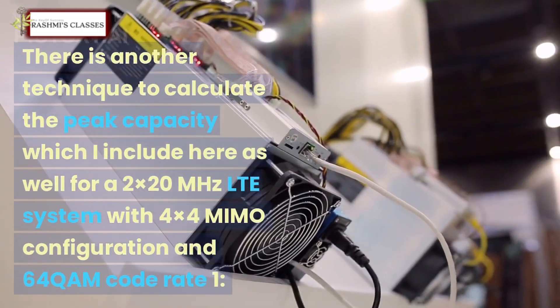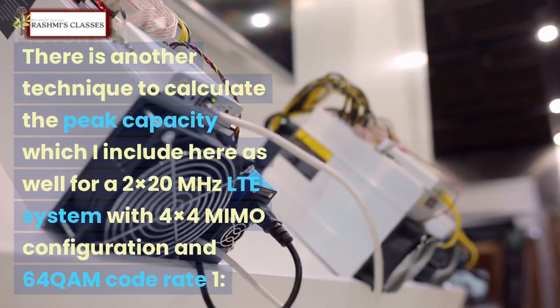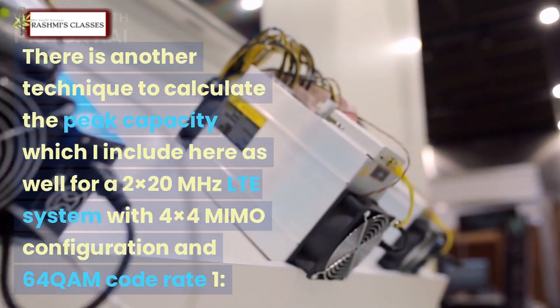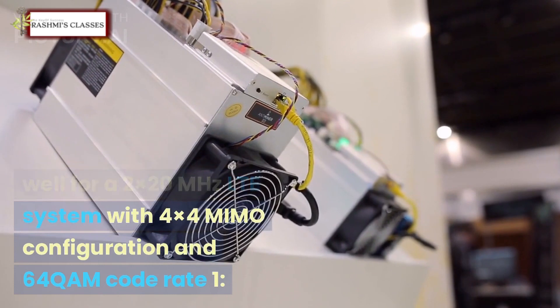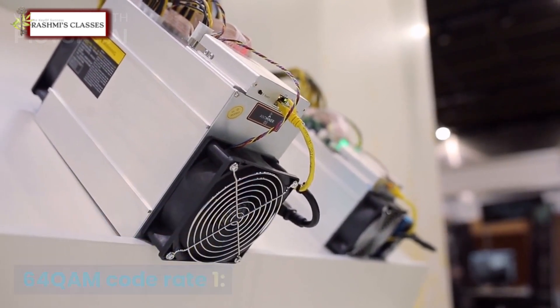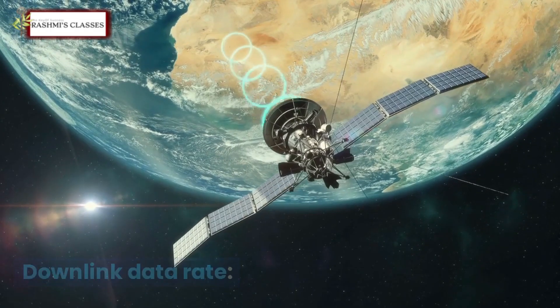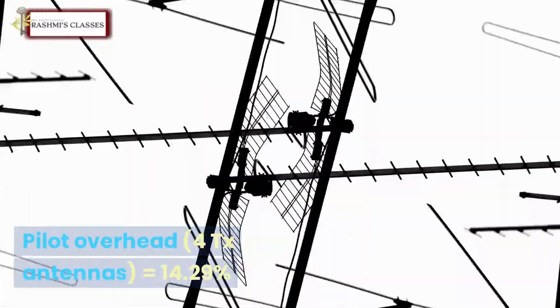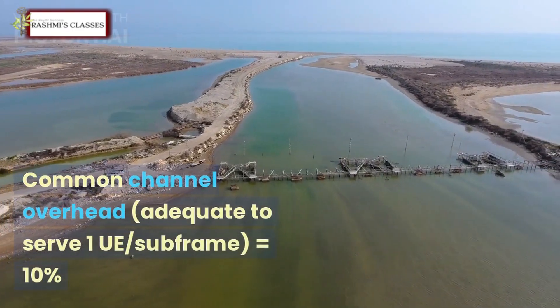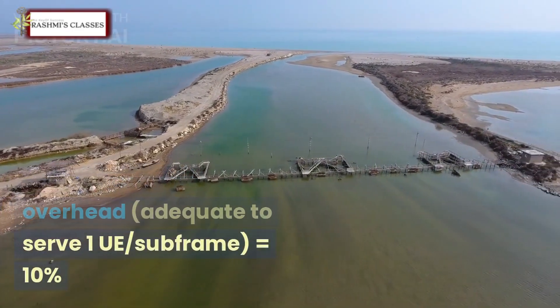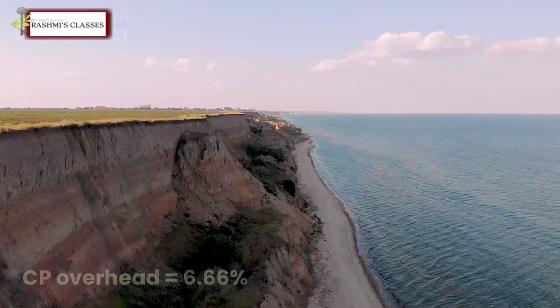There is another technique to calculate the peak capacity which I include here as well. For a 2x20 MHz LTE system with 4x4 MIMO configuration and 64-QAM code rate 1: Downlink data rate pilot overhead for 4 antennas = 14.29%, common channel overhead adequate to serve one UE subframe = 10%.